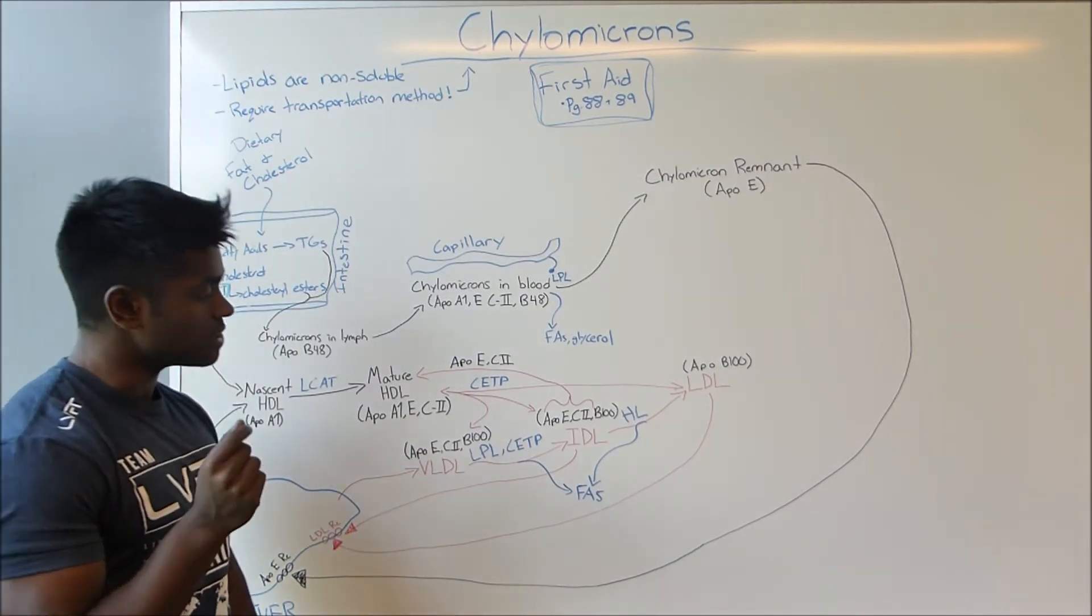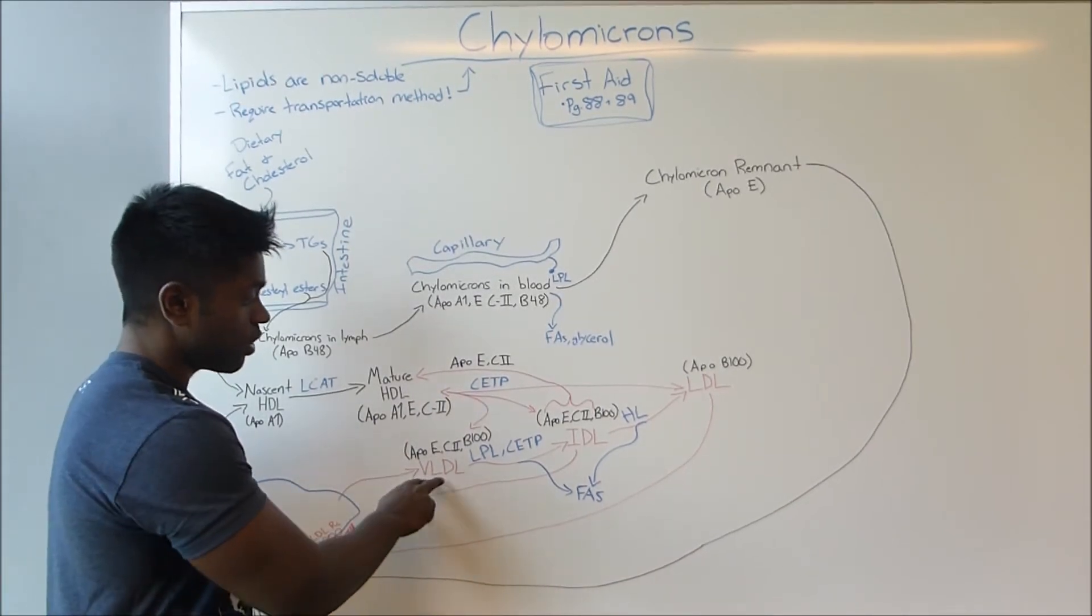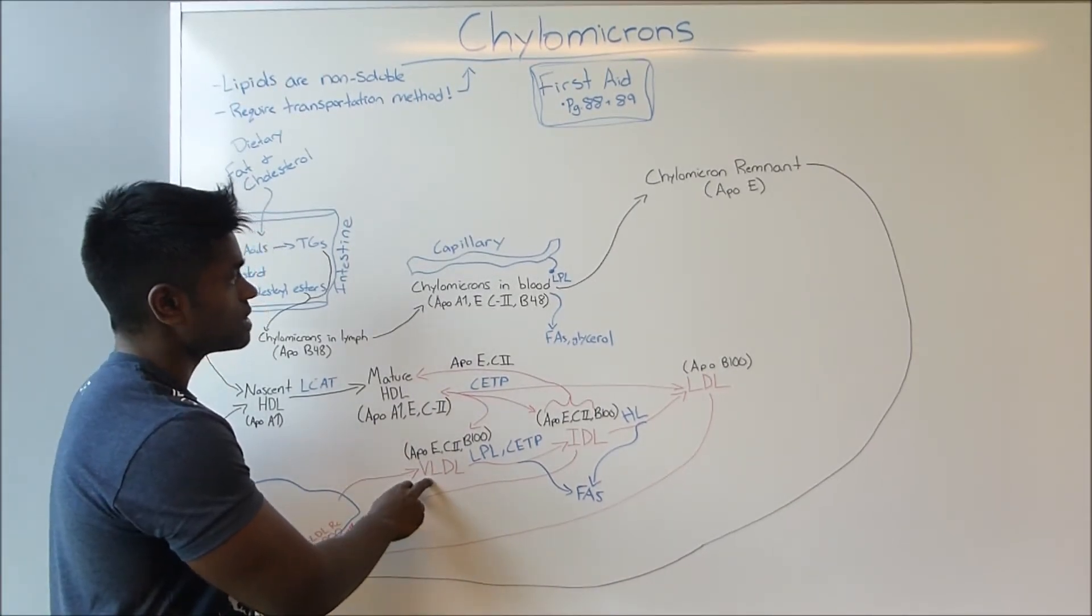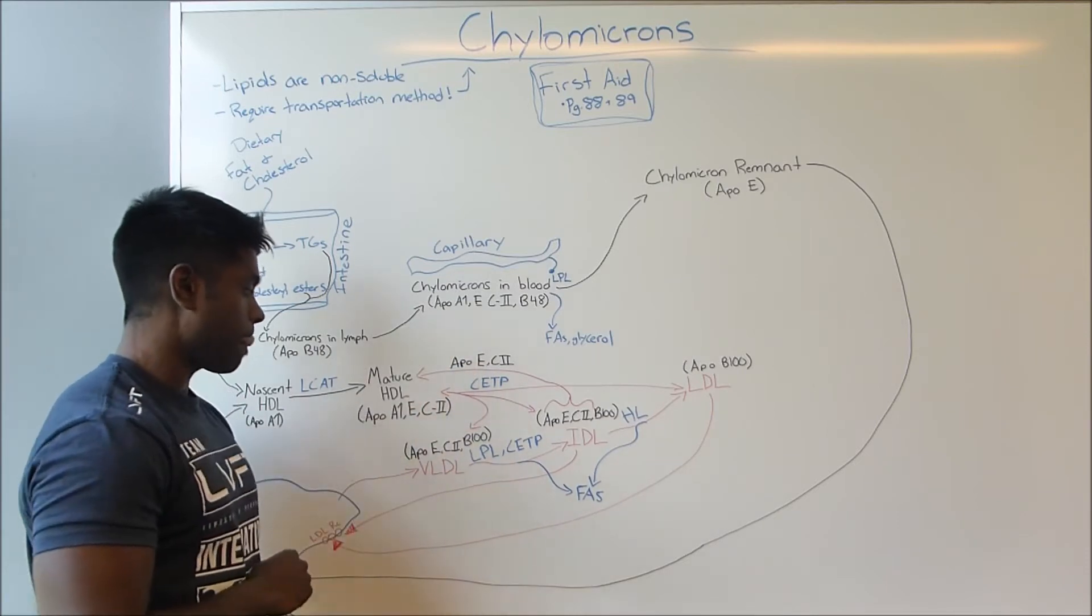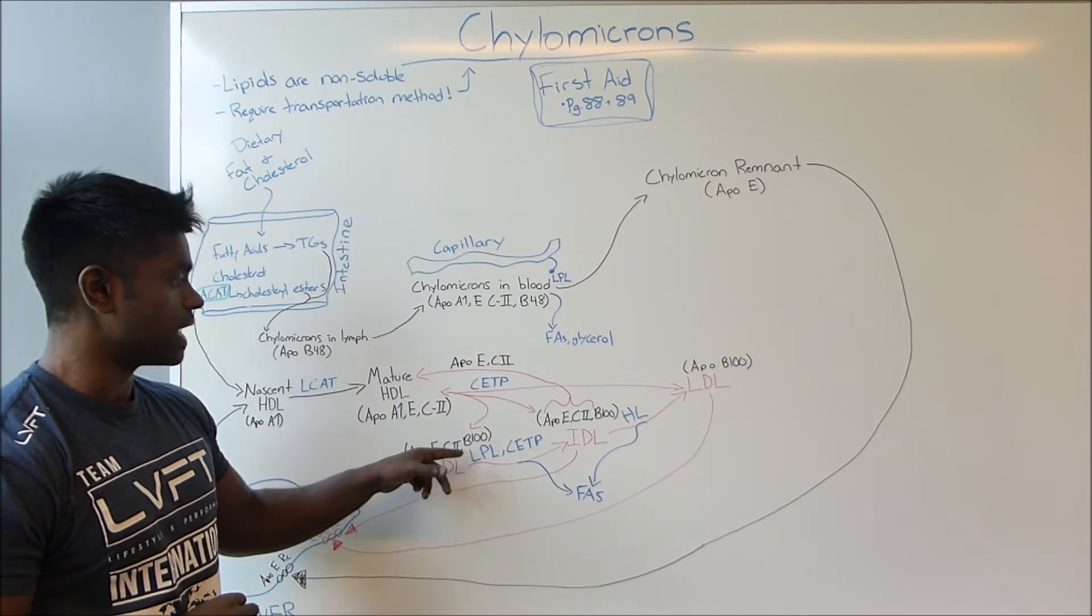VLDL is cool because it can harness fatty acids using a similar mechanism as chylomicron. VLDL can travel into the blood and just like how we saw with ApoC2 and LPL, the triglycerides contained within the VLDL can be converted into fatty acids.